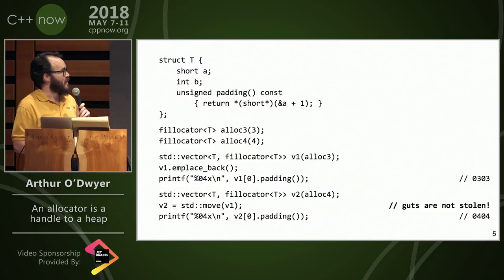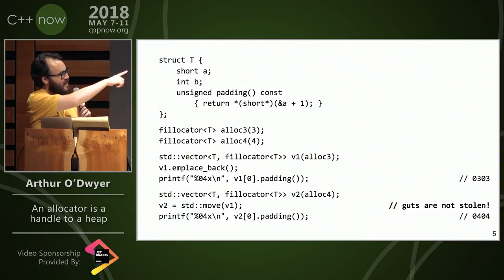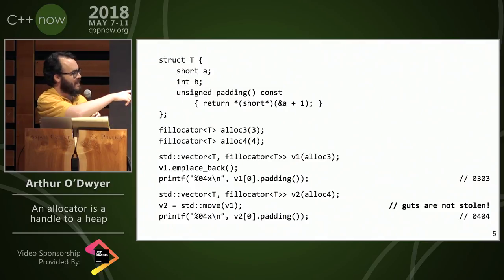I've got a struct T, and I just go look at its padding, and I assert that indeed, if the vector that I'm looking into is using alloc three here with value three, the padding comes out all threes, and with alloc four, it comes out all fours.